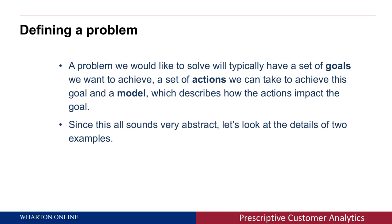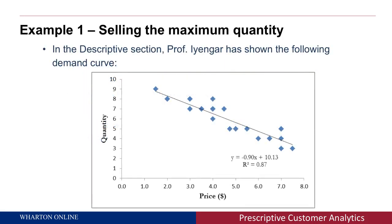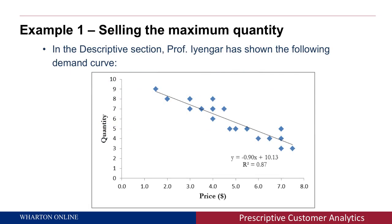Now let's look at a very unique example that you've actually seen in the previous lecture. The first example is: how do you find the optimal price — the best price to set in order to sell the maximum quantity of product? In the descriptive lecture, Professor Iyengar showed you a demand curve. In that graph, the x-axis is the price you set for a product, and the y-axis is the quantity being sold when you change the price. As you can see, when you increase the price, the quantity goes down.